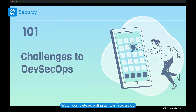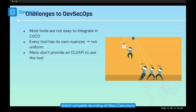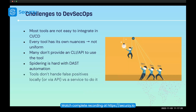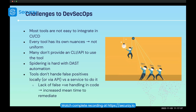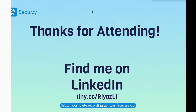What are the challenges to DevSecOps? Most tools are not easy to integrate in CI/CD — continuous integration and continuous deployment. Every tool will have its own nuances, and one of the main problems is that many tools don't provide an API that we can call. Spidering is hard with DAST automation, and tools also don't handle false positives locally — there's a lack of false positive handling. Thank you so much for joining. I hope you learned something informative.